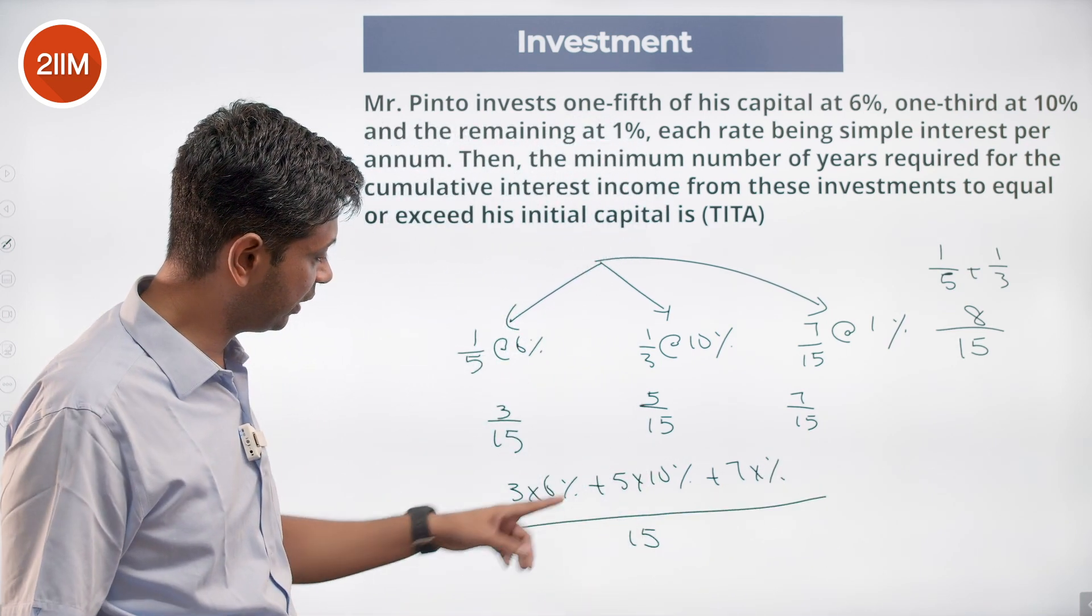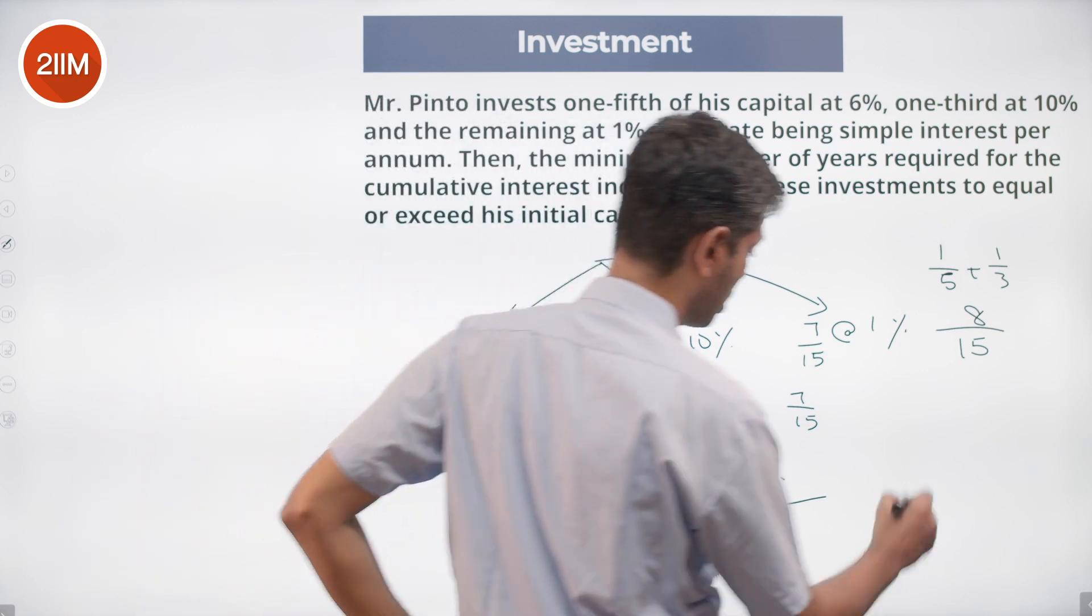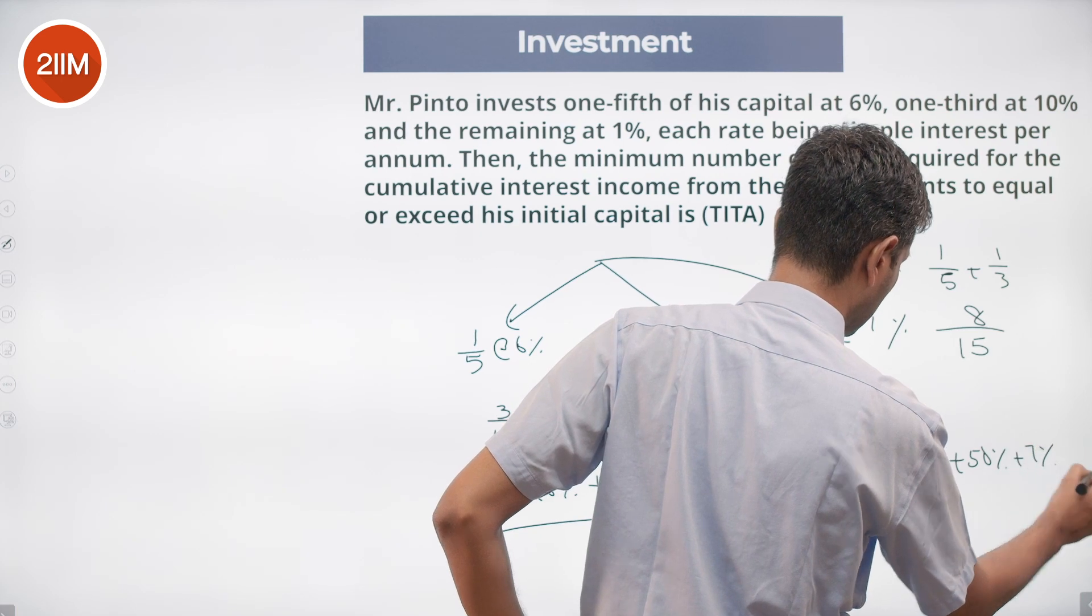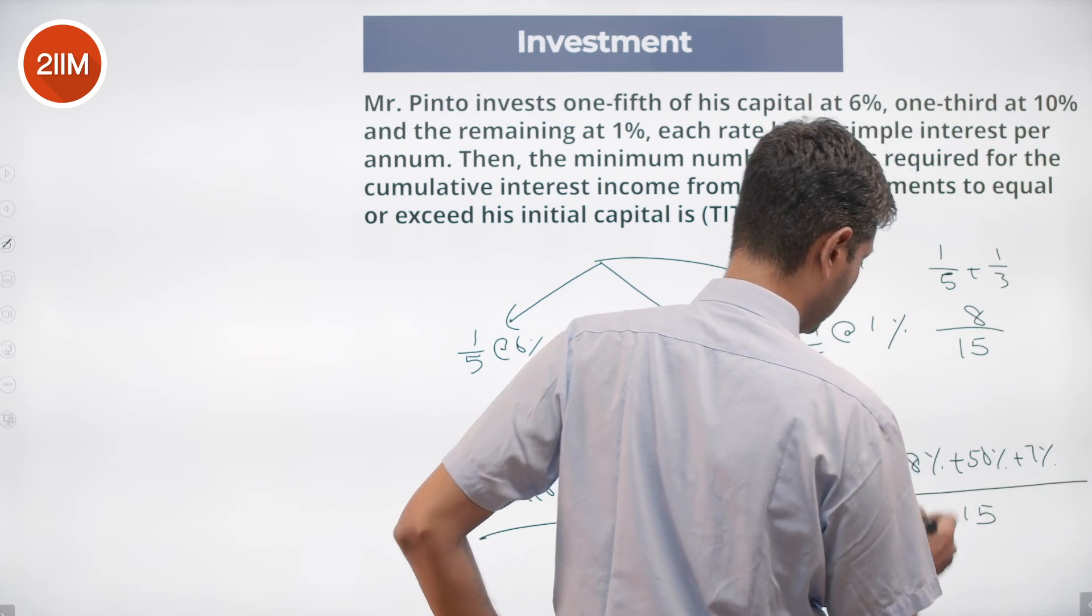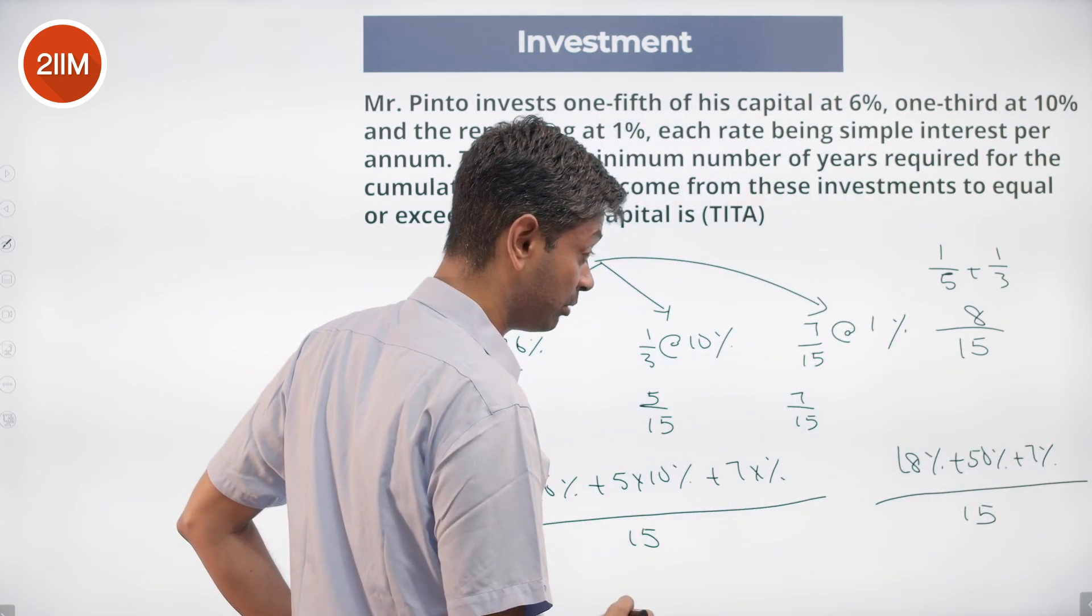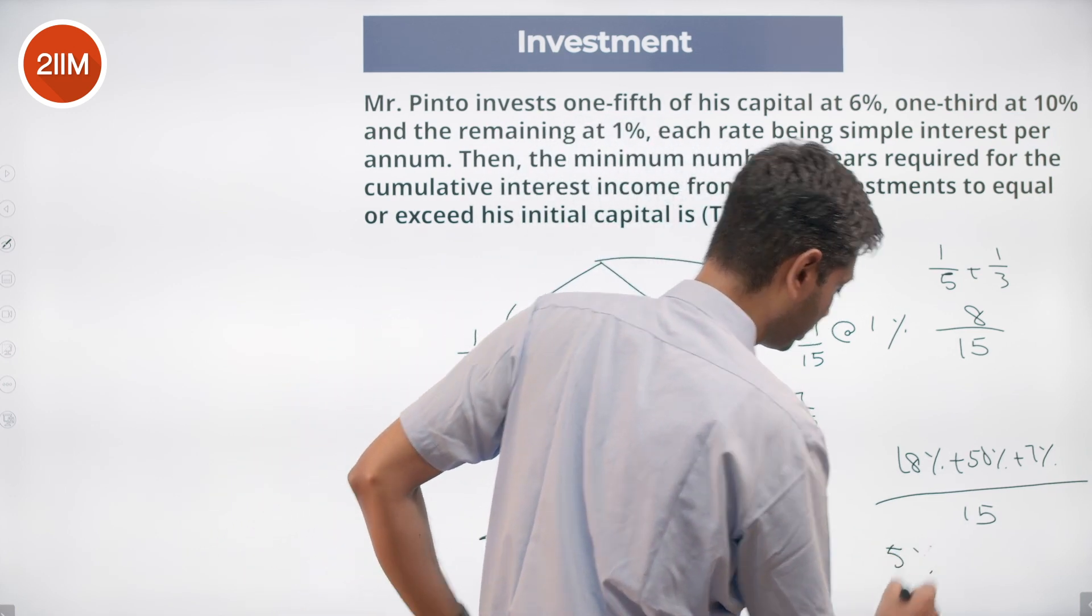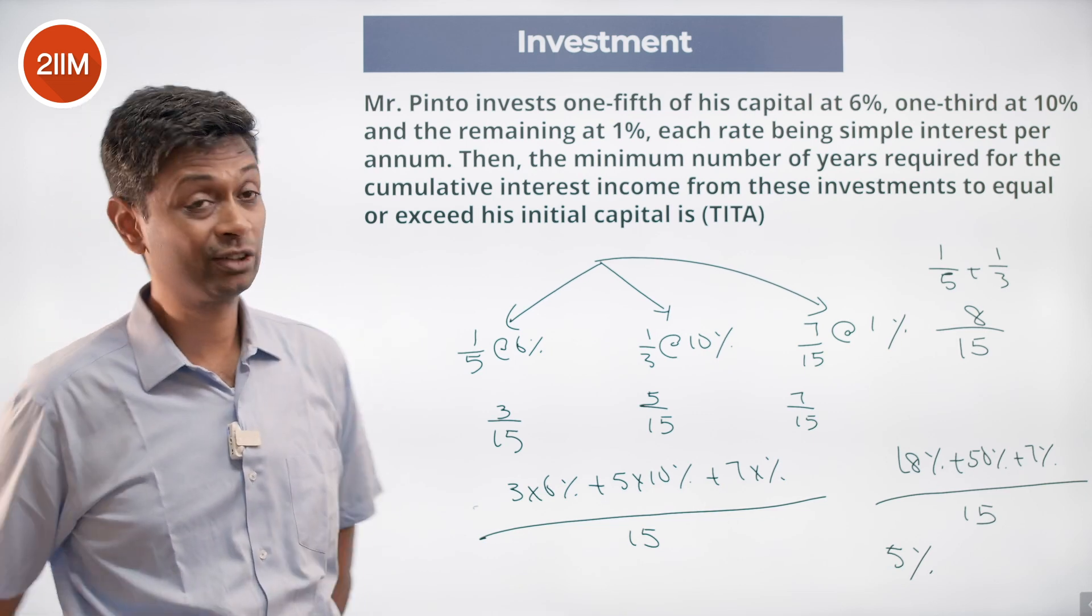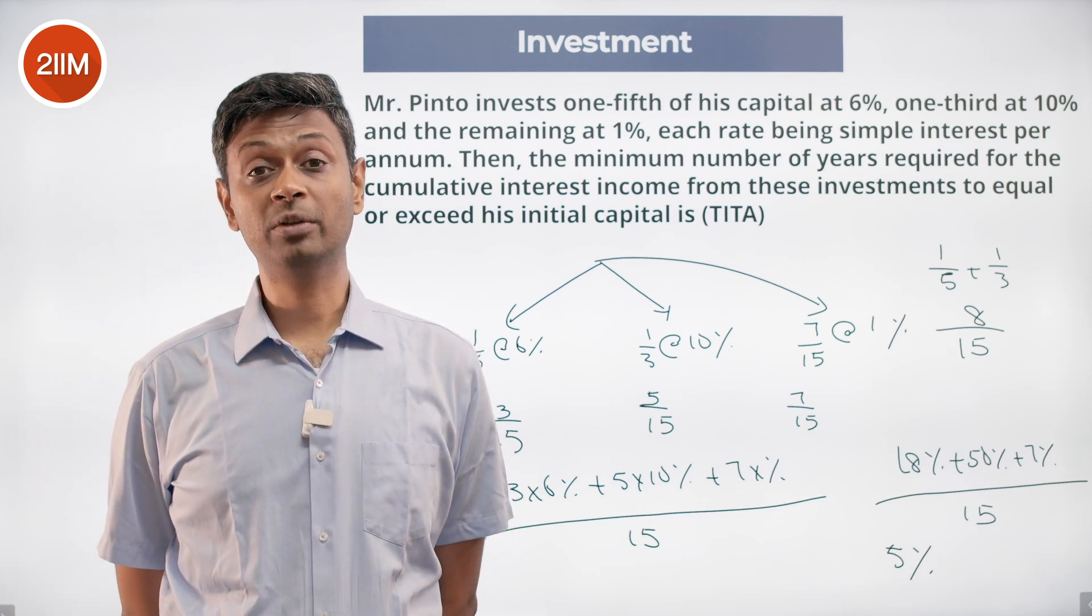3 into 6 is 18, 5 into 10 is 50, 18 plus 50 plus 7 divided by 15, 68 plus 7, 75 by 15, this is 5 percent. The weighted average of all of this is 5 percent, so it's like putting the whole capital at 5 percent.